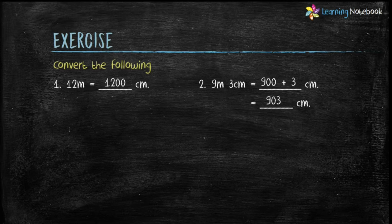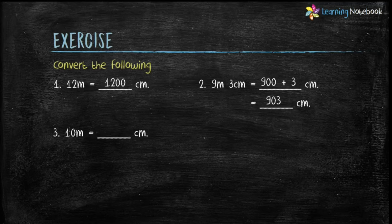Third part: 10 meters equals to how many centimeters? 1 meter equals to 100 centimeters, therefore 10 meters equals to 10 into 100, which equals to 1000 centimeters.